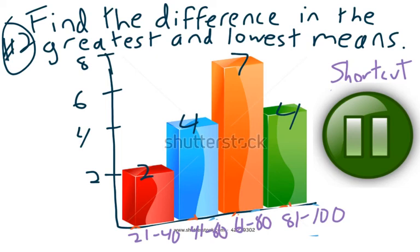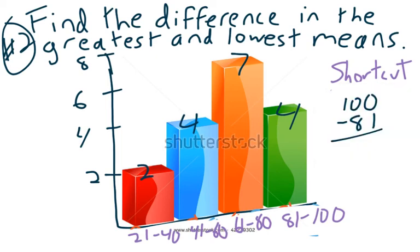Alright, you should have your answer now. And we should have gotten 100 minus 81 gives us 19. So the upper level or maximum values can be 100. The minimum values are 81.